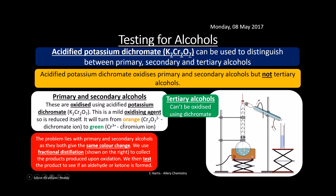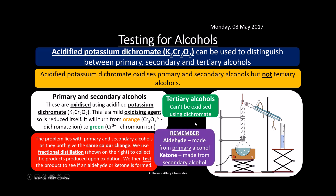The problem is that primary and secondary alcohols both give the same color change, so we can't distinguish between these two using this alone. What we have to do is use fractional distillation to collect the products produced upon oxidation, and then test the product to see if an aldehyde or a ketone is formed. Aldehydes are made from primary alcohols, so if we form an aldehyde, the initial alcohol was primary. If we form a ketone, the initial alcohol was secondary.